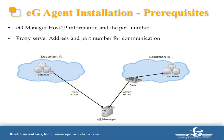Before we start the installation, we need to gather two basic required pieces of information. First, we need to know the EG Manager IP or the host name and the port number for communication. I'm going to use egontab.eginnovations.com and the port number is 80 for this installation.